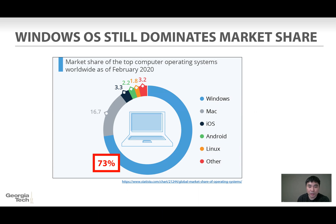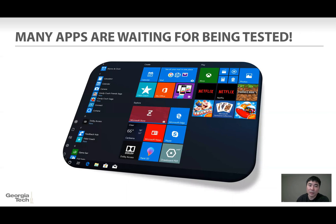Everyone has a machine, like a workstation, laptop, computer, or mobile devices. But as you can see from the figure, still about 73% of the machines are using the Windows operating system. So Windows still dominates market share, and it also means that many applications are waiting to be tested. But unfortunately, testing Windows applications is not that trivial.